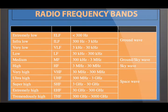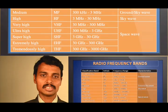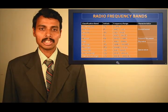Electromagnetic waves have different modes of propagation: ground wave propagation, sky wave propagation, and space wave propagation. This electromagnetic frequency band has a classification based on the parameter called wavelength of propagation, as wavelength and frequency are related.